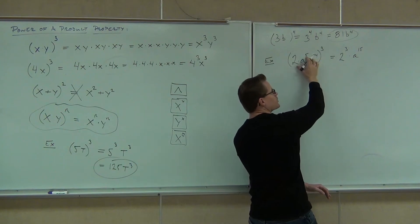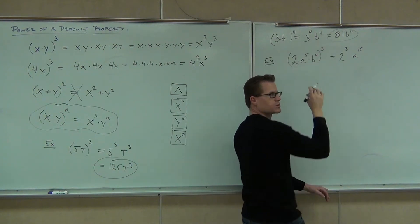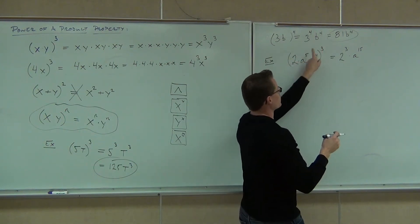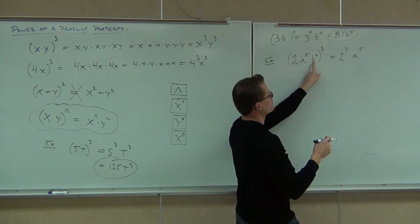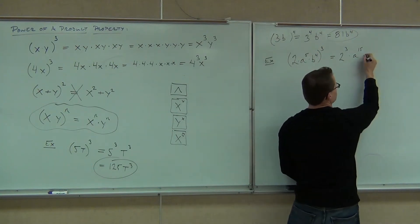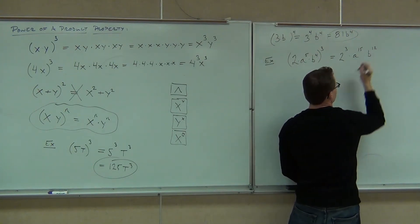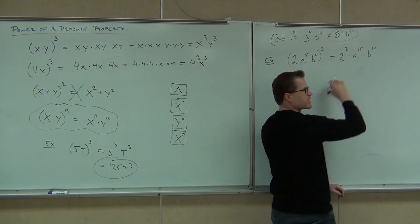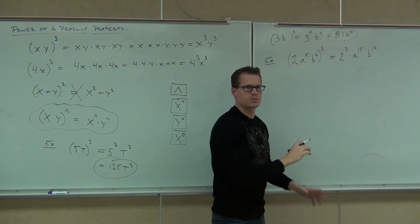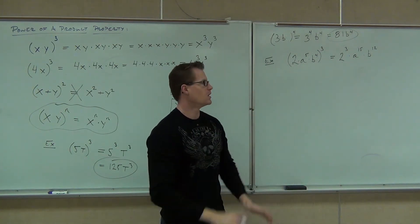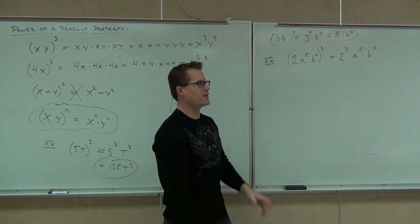That's an exponent being raised to an exponent. So notice, you're taking 2 to the 3rd, a to the 5th to the 3rd, b to the 4th to the 3rd. So you're going to get b to the 12th. Do you have to have the multiplication signs? No, you don't. It's implied if you stick everything next to each other that's being multiplied.